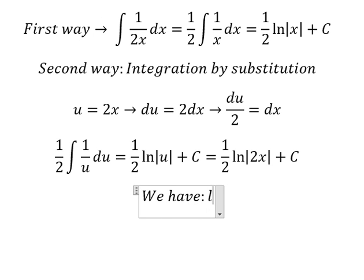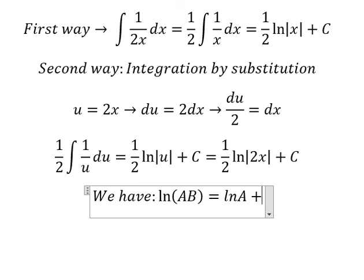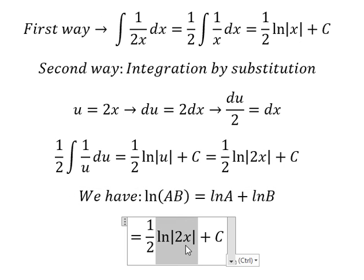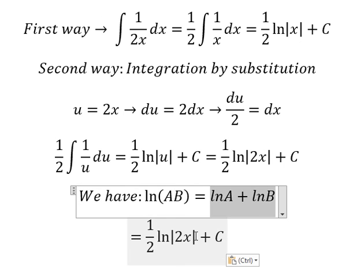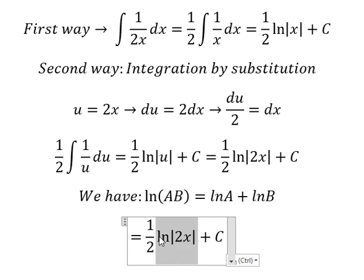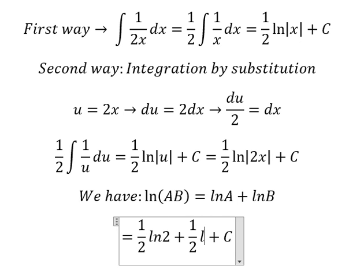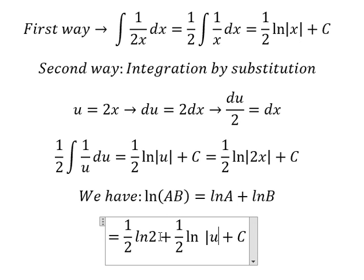That is about ln(AB) equals to ln A plus ln B. Now we need to transform this one into this one. So we have (1/2) ln 2 and we have (1/2) ln of the absolute value of x.